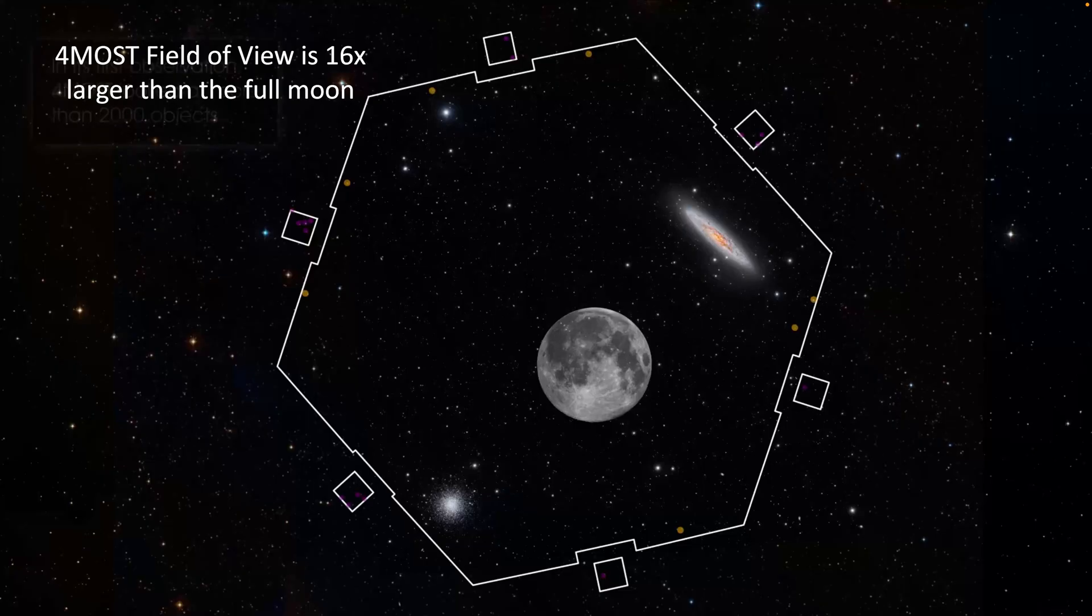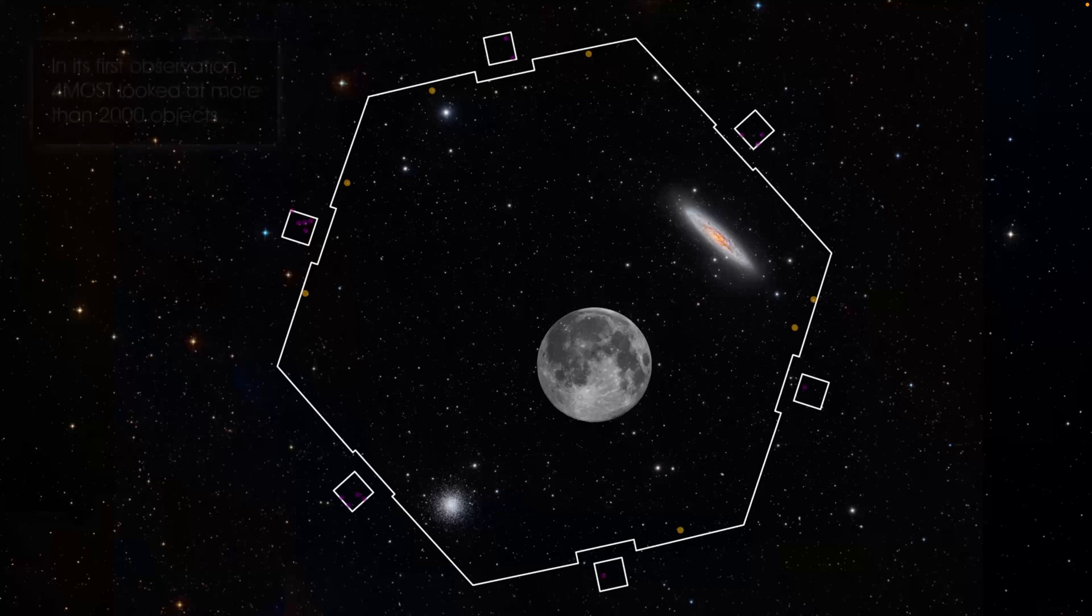Foremost also has an incredibly large field of view compared to other spectrographs, and even many other imaging telescopes. Here's that field of view compared to the full moon. In astronomy terms, we usually use units called degrees to measure sizes on the sky, and the Foremost field of view is about 4.2 square degrees, in a hexagon shape with a diameter of about 2.5 degrees. To put this in context, rather than me just saying random numbers, let's compare it to some other instruments and telescopes.